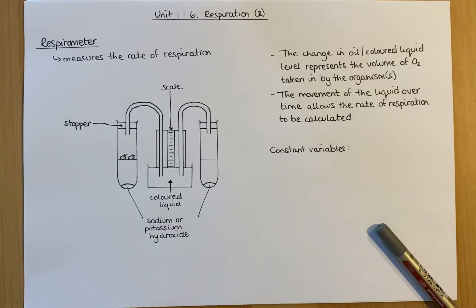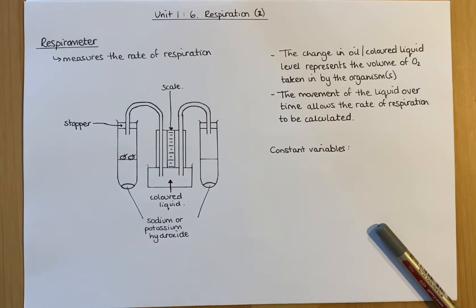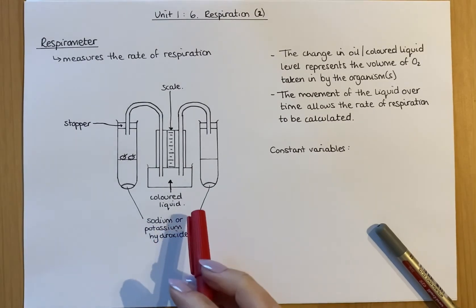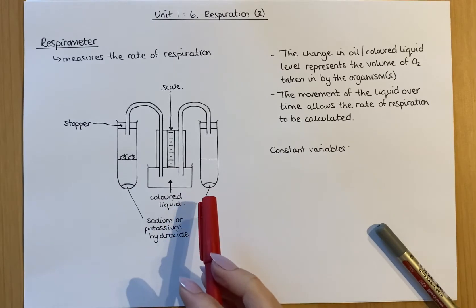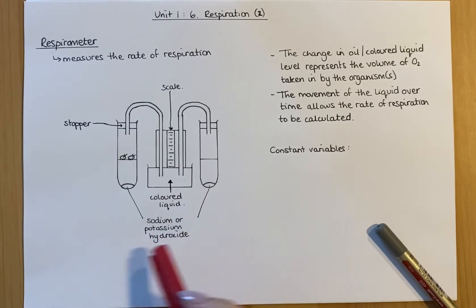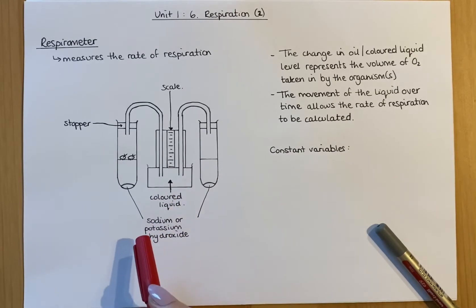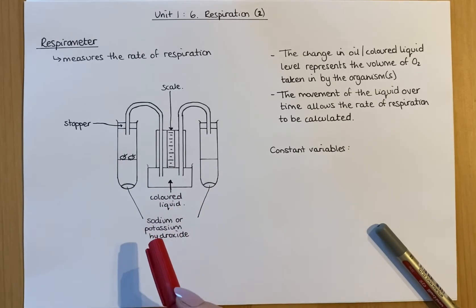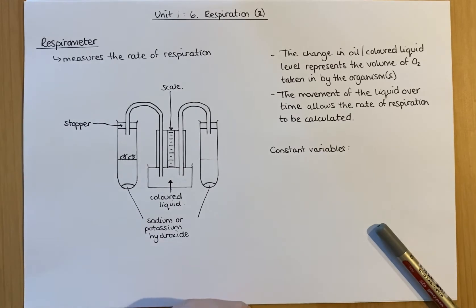This video is the second part of respiration, which is the last subtopic in Unit 1 of the National 5 course. I've drawn a diagram here which shows a respirometer. This whole set-up is a respirometer, and respirometers measure the rate of respiration in something living.